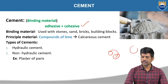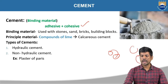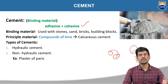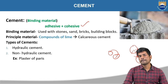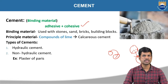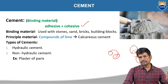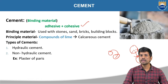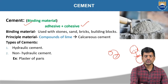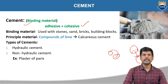But if you take two aggregates and add water to them, they are not going to bind. That is why cement is having adhesive and cohesive property. The attraction between two different types of molecules is adhesive, and cohesive is the attraction between molecules of the same properties.